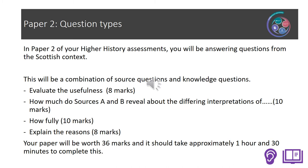We're now going to look at Paper 2, which covers the Scottish context. In this paper, there will be a combination of source questions and a knowledge question. The question types are: an Evaluate the Usefulness question worth 8 marks, the Two Source question worth 10 marks, a How Fully question worth 10 marks, and an Explain the Reasons question worth 8 marks. The paper is worth 36 marks and should take about an hour and a half to complete.